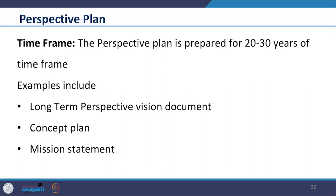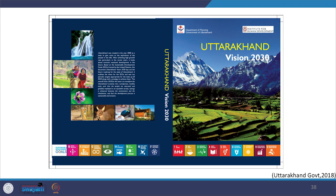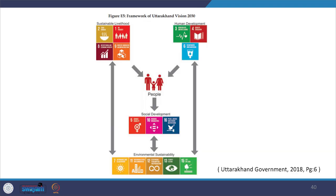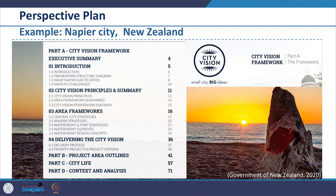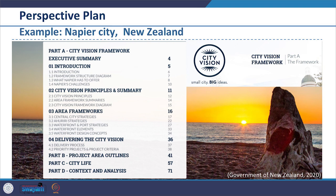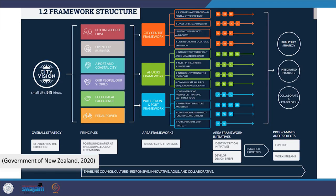The perspective plan is prepared for a 20 to 30 year timeframe. Examples include the long-term perspective vision document, the concept plan, or just the mission statement. For example, Uttarakhand State has prepared its Vision Document 2030, looking into sustainable livelihood, human development index, social development and environmental sustainability and creating a resource mobilization plan. Another example is the City Vision Framework document of Napier City in New Zealand, which provides vision, overall strategy, principles, area framework, initiatives, programs and projects.